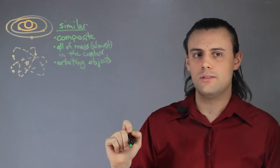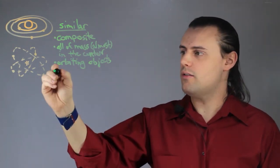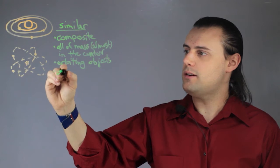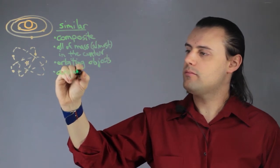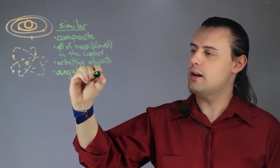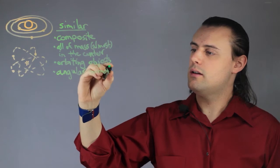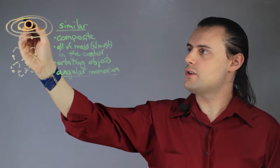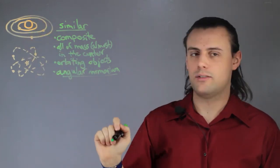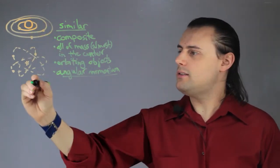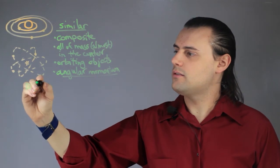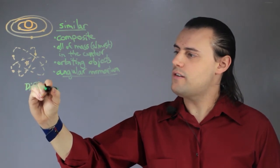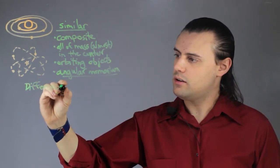And one final similarity is that both have this notion of the conservation of angular momentum, which arises from certain types of symmetries, here a symmetry about the rotation axis. Now let's discuss the differences. There are very fundamental differences between these two types of composite objects.